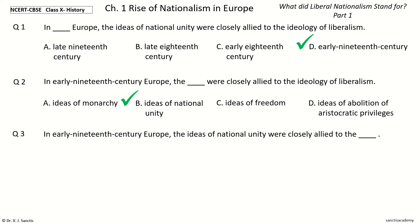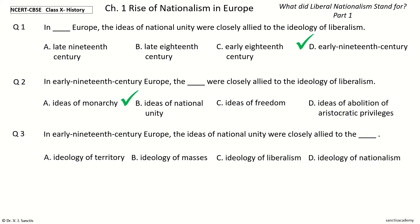Question 3. The ideas of national unity were closely allied to the dash. The options are: ideology of territory, ideology of masses, ideology of liberalism, ideology of nationalism, ideology of liberalism.